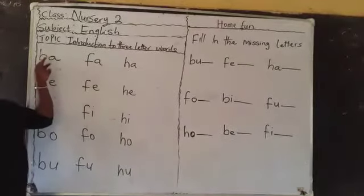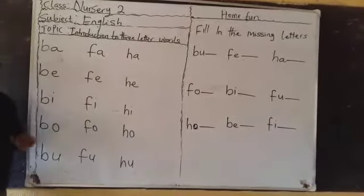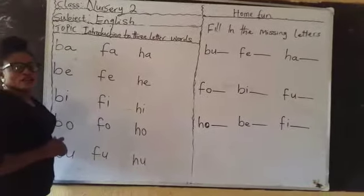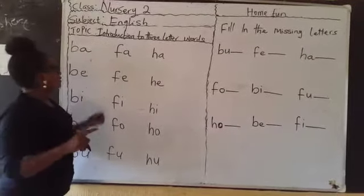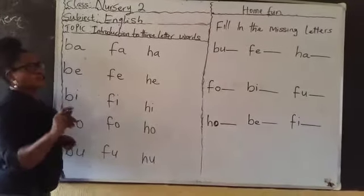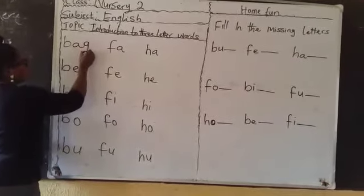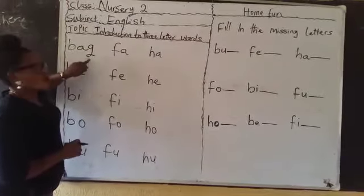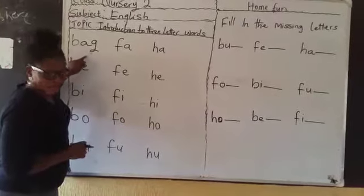Now here we have ba. What is this everybody? Ba. B. Ah. Ba. Now we are going to use a consonant letter to have 3-letter words. Now we have ba. We are going to add a letter to get a word. And what is the letter? Let us use g — g-g-g. Another consonant. Now remember we say that this is ba. Ba. Then when we add the letter g, it becomes a word. Ba. Again. Ba.